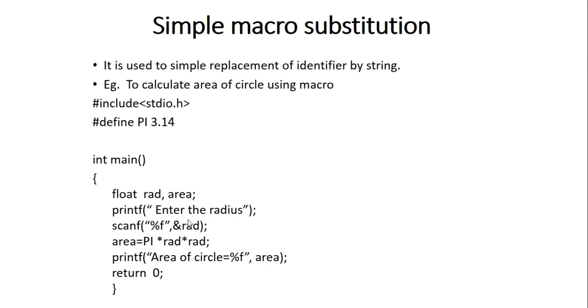So enter the radius for the circle. Take scanf for radius. And area equals to PI - PI value is defined here, so we are writing PI.